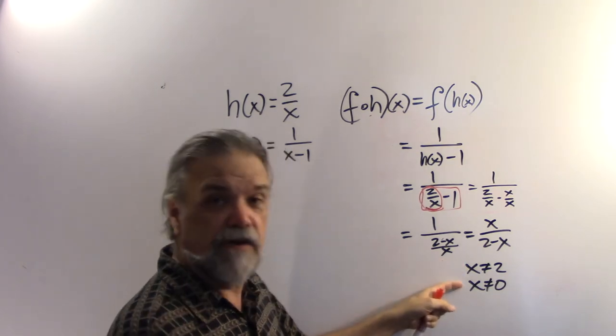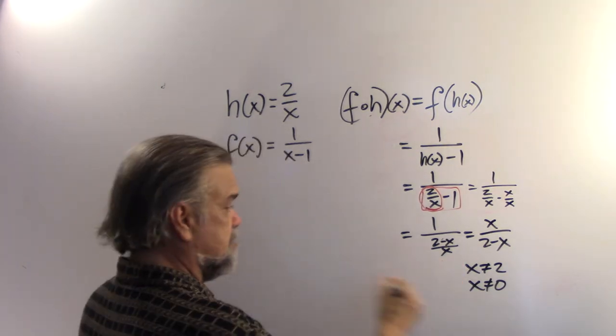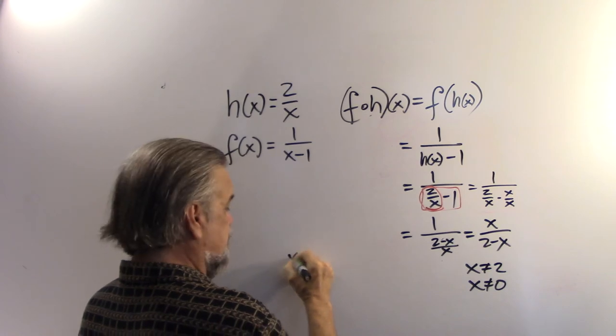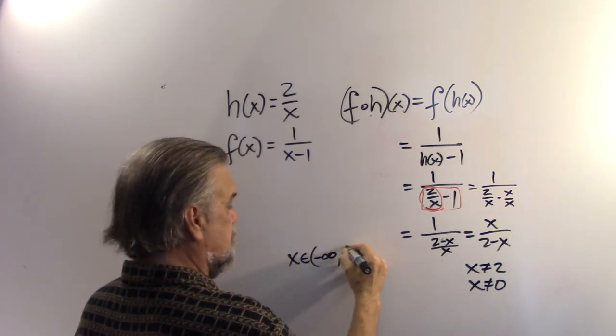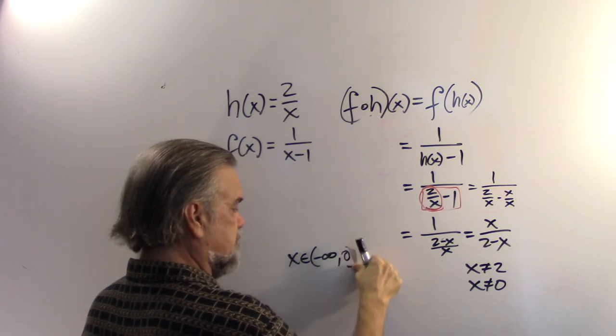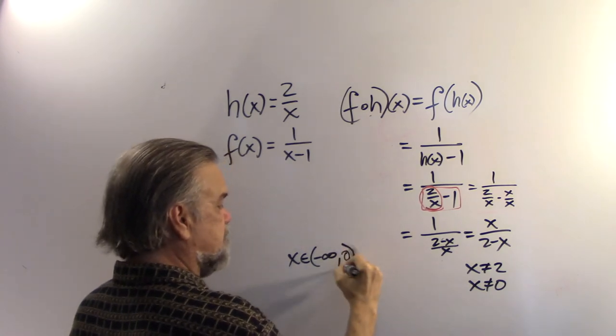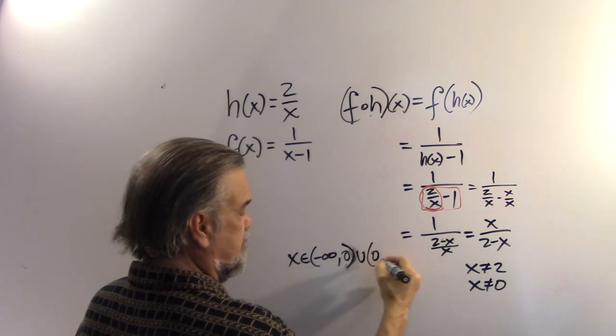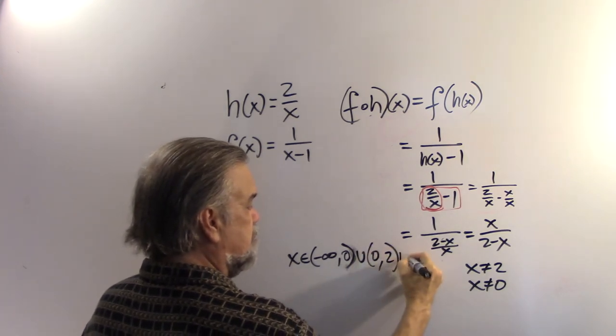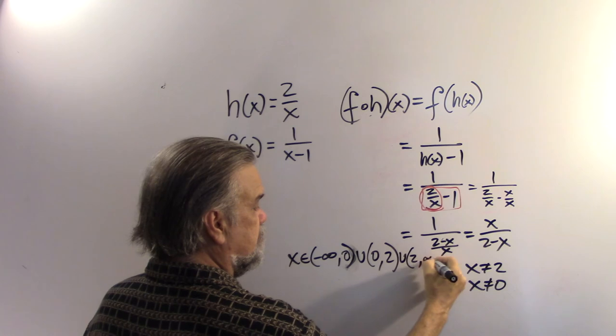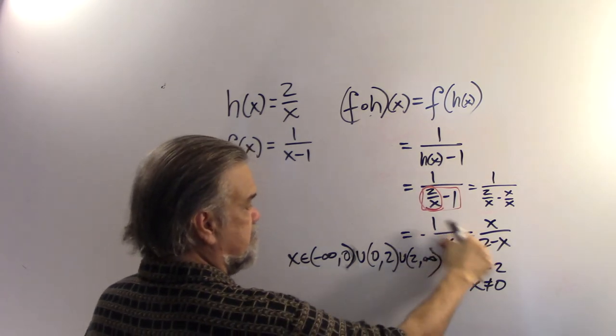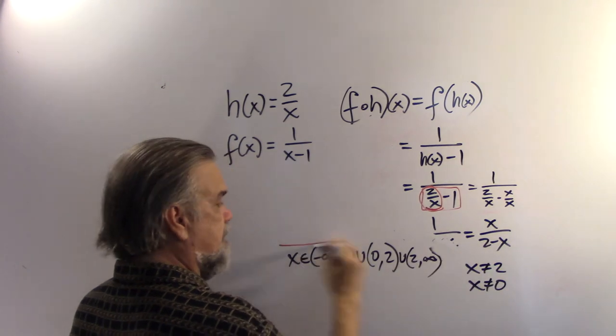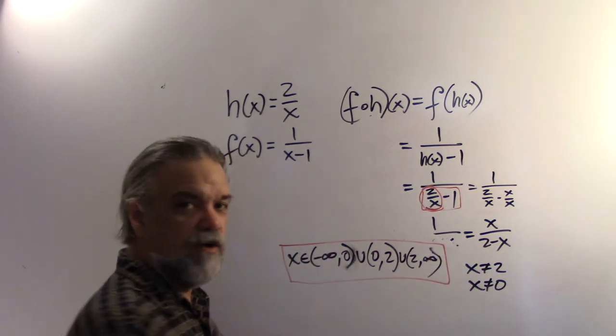So we have to have both of these restrictions on the domain. So I would say this domain would be x goes from negative infinity to 0. Nope. Not square bracket. Sorry. Parenthesis. And union 0 to 2, union 2 to infinity. Kind of infringing on the rights of that fraction there. That would be my domain.